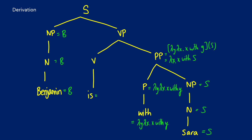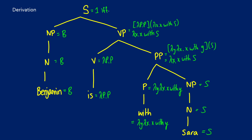For the verb phrase, 'is' is the copula, so it's lambda p dot p. Combining lambda p dot p with lambda x dot x with s: for every case where we have p, we replace it with lambda x dot x with s, so our result is lambda x dot x with s. For the truth conditions, this is one if and only if we apply Benjamin to our function, giving us: true if and only if b is with s — that is, if and only if Benjamin is with Sarah. Next time, we're going to look at how it works with noun phrases, so we can finally talk about determiners.